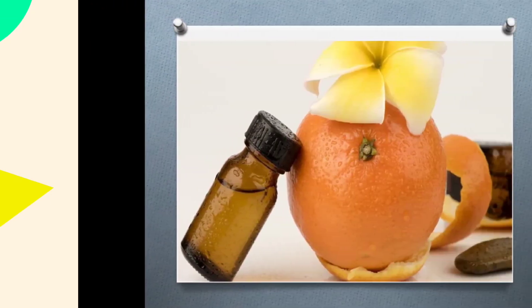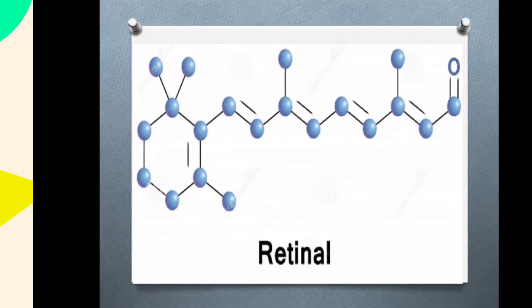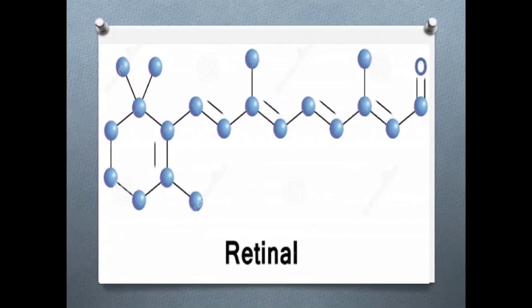Aldehydes can be found in food — octanal is found both in orange oil and orange juice and is used industrially to supply an orange scent, especially to perfumes and food preparation. Aldehydes can also be found in the human body: retinaldehyde is one of the many forms of vitamin A and is the chemical basis of human and animal vision, allowing certain microorganisms to convert light into metabolic energy.